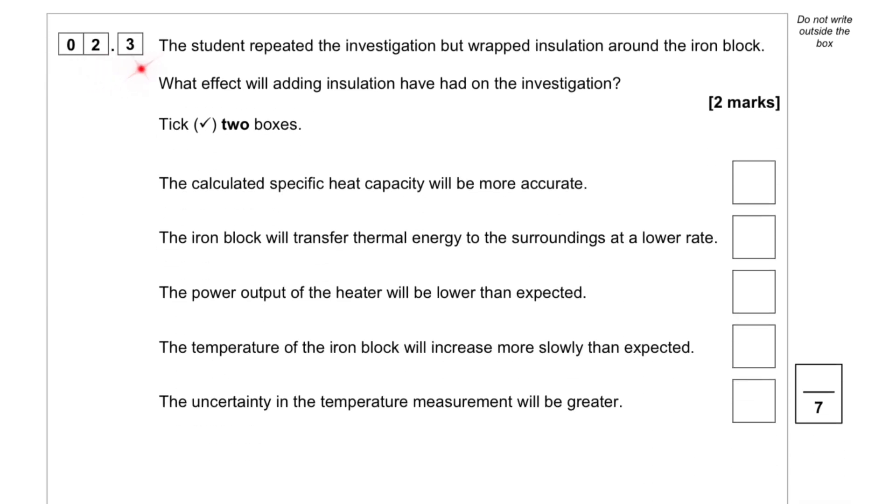Question 2.3. The student repeated the investigation, but wrapped insulation around the iron block. What effect will adding insulation have had on the investigation? We need to tick two boxes.